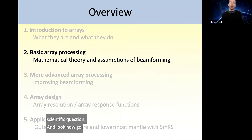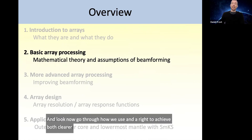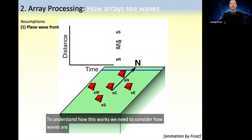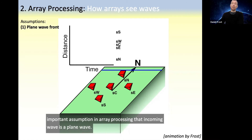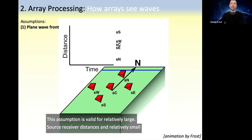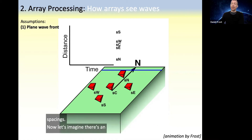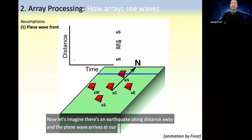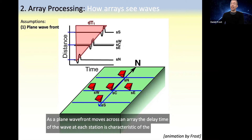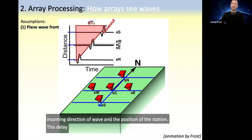I'll now go through how we use an array to achieve both clearer signals and extract the directivity information from seismic waves. To understand how this works, we need to consider how waves are seen by seismic arrays. An important assumption in array processing is that the incoming wave is a plane wave. This assumption is valid for relatively large source-receiver distances and relatively small station spacings. As a plane wavefront moves across an array, the delay time of the wave at each station is characteristic of the incoming direction of the wave and the position of the station.